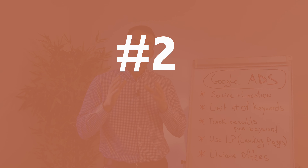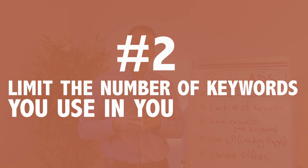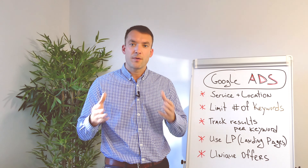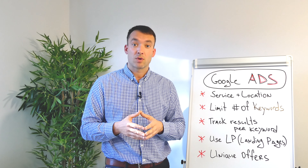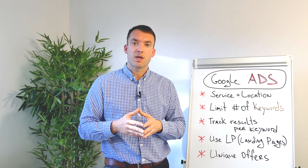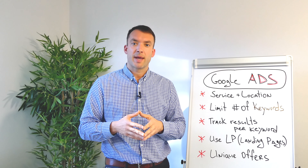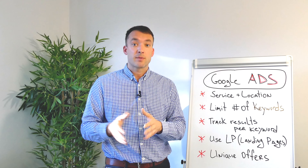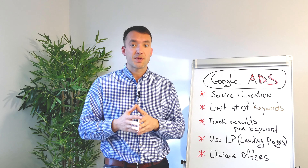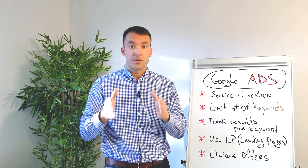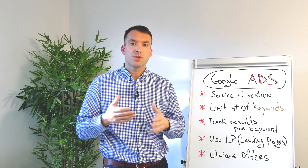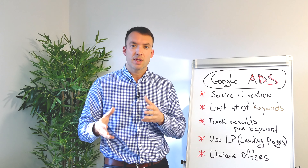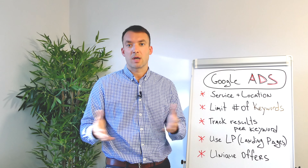Tip number two: limit the number of keywords you use in your campaign. If you have a small budget — let's say up to $50 per day to spend on your Google Ads — don't add hundreds of keywords into your campaign. Instead, focus on just 5 to 10 to start with. Make sure your ad appears 100% of the time during the day for these selected keywords. When using too many keywords with a small daily budget, it gets really hard to check what's actually working or not.